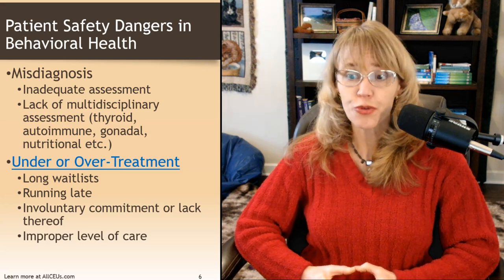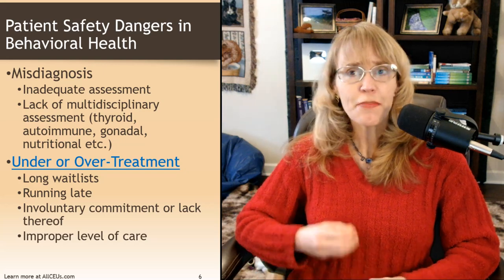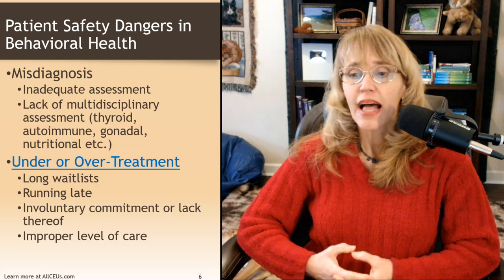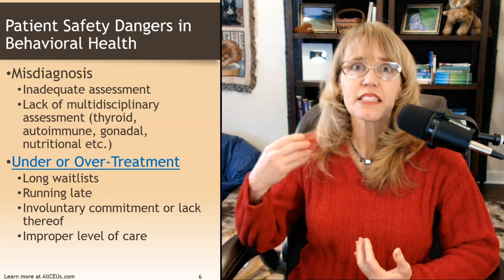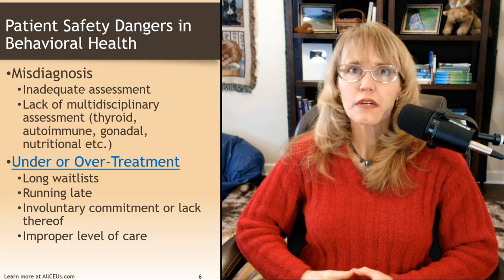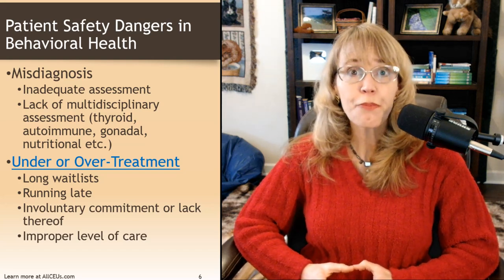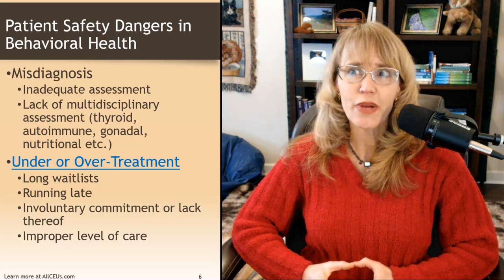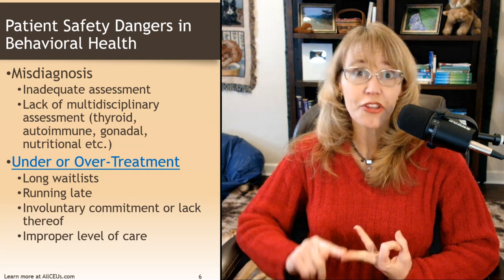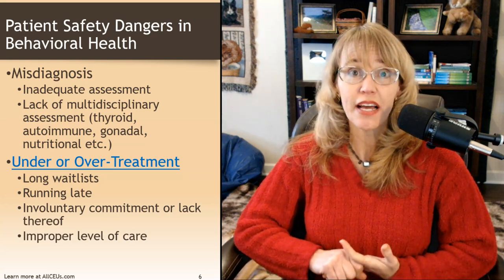Which takes us to under- or over-treatment. Long wait lists can be a problem. If somebody comes in and they're in crisis, or motivated for treatment, and we say, 'Great, we got you on the list — we'll see you in six months,' that's a problem. It's important that we consider what we can do to mitigate long wait lists and what resources are there for the client. Are there intervention-level groups they can attend? Are there support groups? Are there other professionals in the community we can make a referral to? That person is there asking for a lifeline — we need to make sure we provide that.